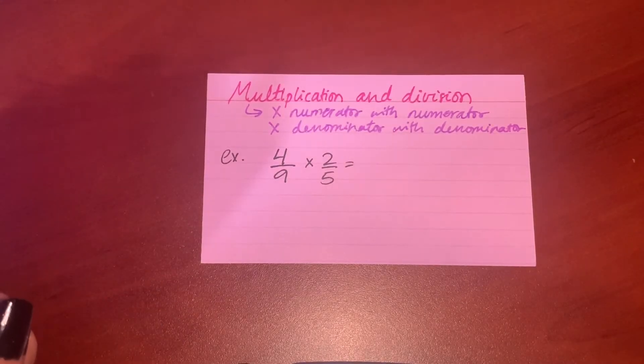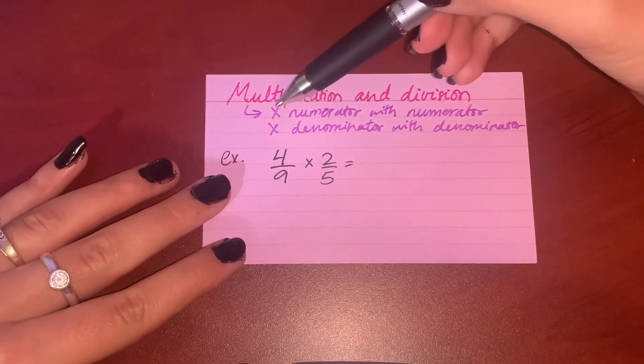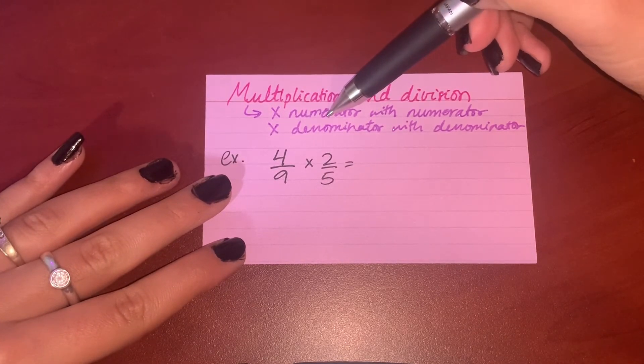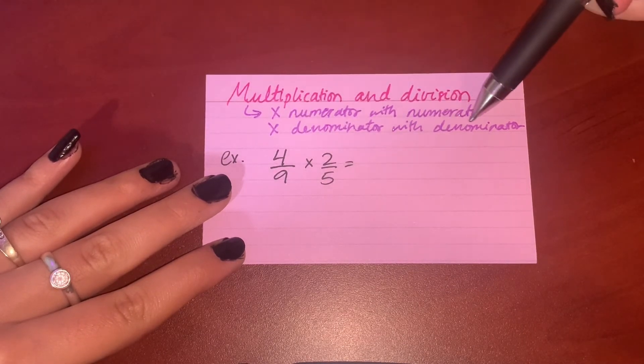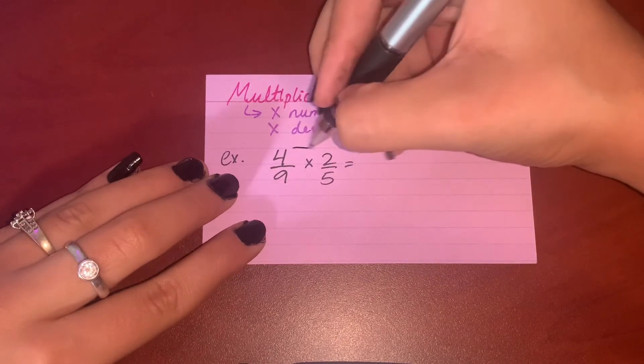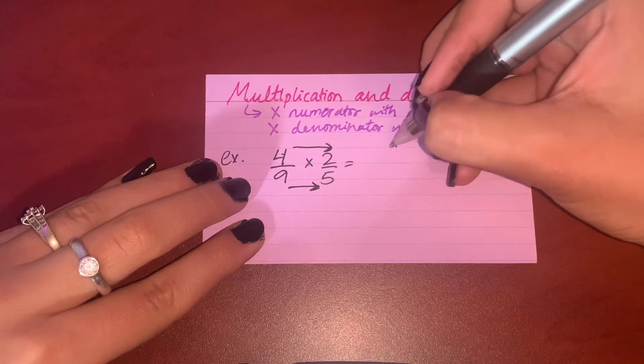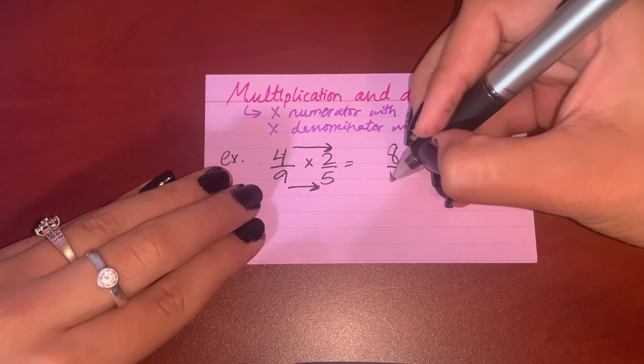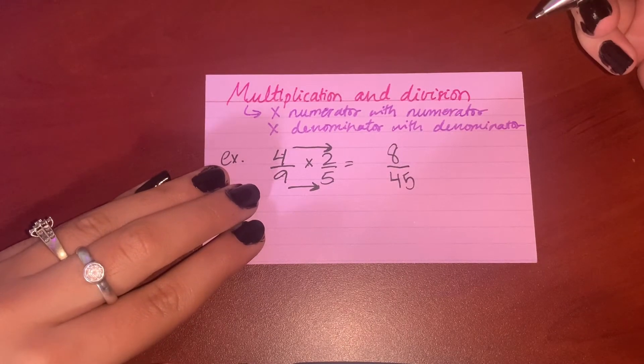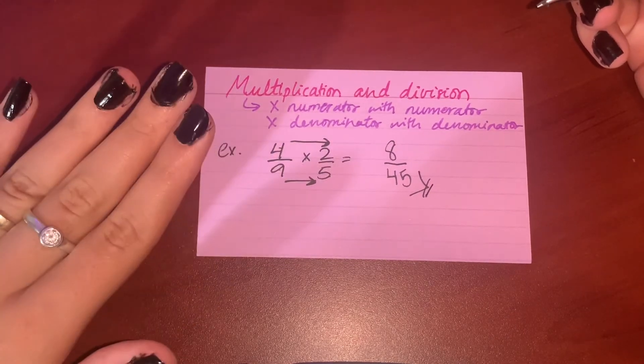Now we come to multiplication and division. Multiplication is very easy, it's very straightforward. It tells you to multiply the numerator with the numerator and multiply the denominator with the denominator. So you just go straightforward and multiply it. So 4 multiplied by 2 is 8, 9 multiplied by 5 is 45. We cannot simplify this further, so this is gonna be our answer. It's very easy.